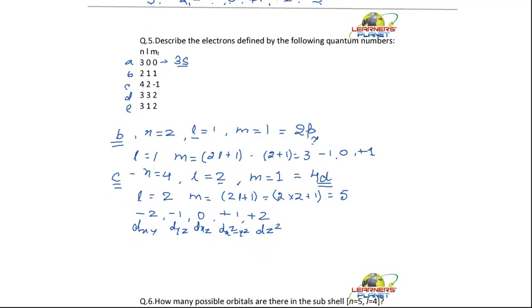Now, for the next one, that is D. What is given there? It is N is equal to 3, L is equal to 3, and M is equal to 2. Just tell me, is this set of quantum number feasible? Is it possible? N is 3 and L is also 3. Whereas, L has N minus 1 values. So, it is not specifying any electron. Got my point?